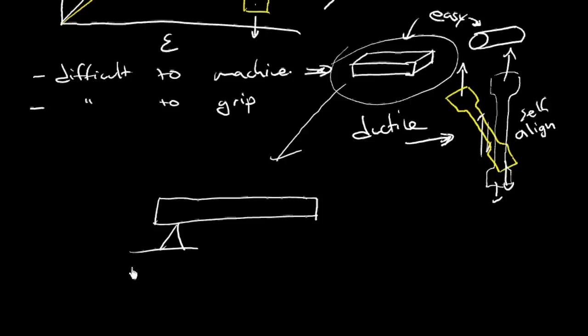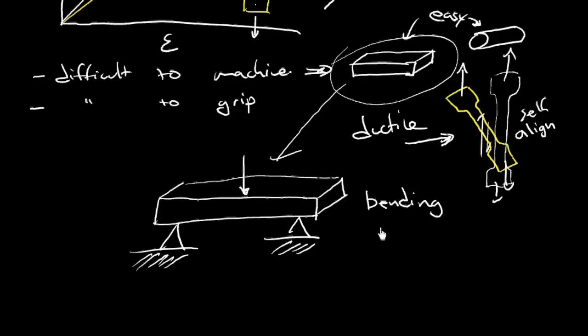And support it in a couple of spots. Support it in a couple of spots and just load it in the middle. And what that is, is that's called bending. And if it's in bending, and I'll draw the beam itself in three dimensions here for you, if it's in bending then the sample is called a beam. The sample is a beam.